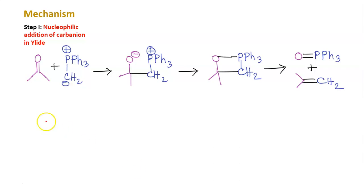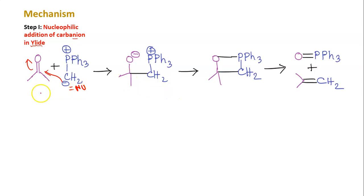Now we will see the mechanism. Two different colors are used for the ylide and the carbonyl compound. The first step is nucleophilic addition of the carbanion in the ylide to the carbonyl carbon. The C=O double bond breaks, giving a negative charge on oxygen and a positive charge on phosphorus, with a new C–C bond formed. This intermediate is called the betaine intermediate. It is not very stable, and in some cases it may not form at all — the next intermediate can form directly.